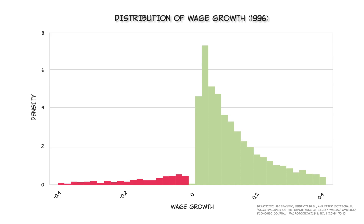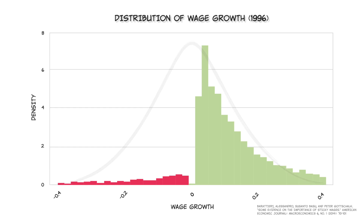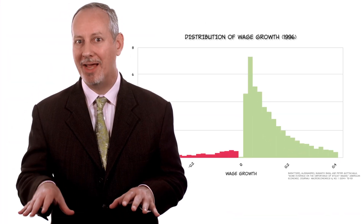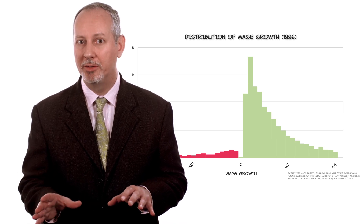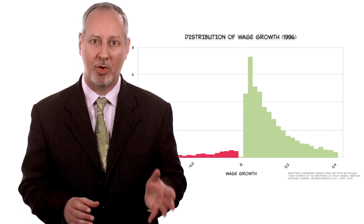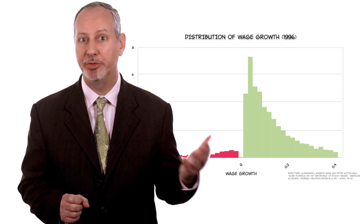Even in a growing economy, we'd expect to see wages fluctuate like other prices, with lots of small wage decreases as well as increases. Supply and demand are constantly changing. But that's not what we see — wages go up much more often than they go down. If nominal wages are sticky in the downward direction, it's going to take a long time to adjust to a shock that requires wages to fall, especially if the inflation rate is low — a point we will return to in a later video.